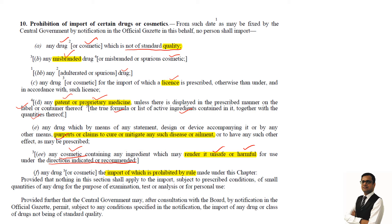Any drug or cosmetic the import of which is prohibited by rule made under the chapter — if there is any rule made for the banning of import, then such drugs will not be allowed to be imported. Provided that nothing in this section applies to the import, subject to prescribed conditions, of small quantities of any drug for the purpose of examination, test, analysis or personal use. Any small quantity for the purpose of examination, test or analysis is allowed.